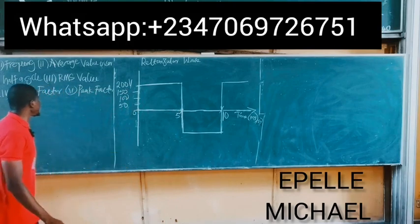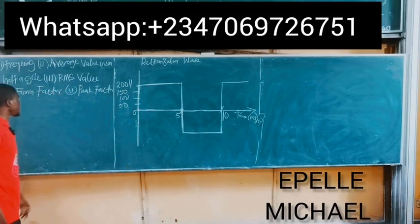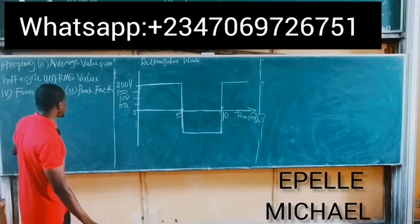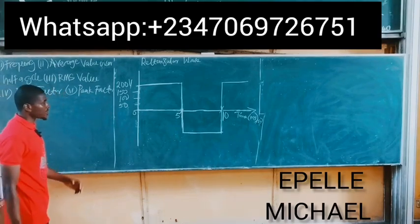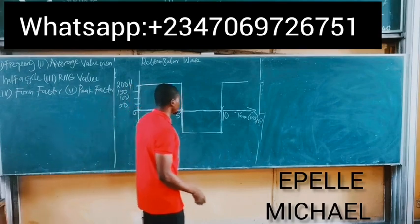So we are given this and we are asked to find frequency, average value over half a circle, the root mean square value, form factor and the peak factor and all the rest.